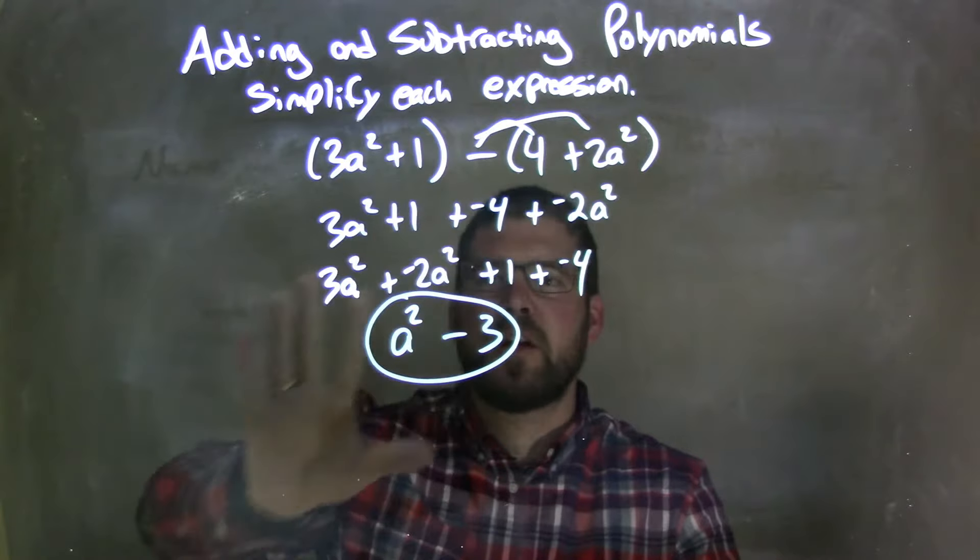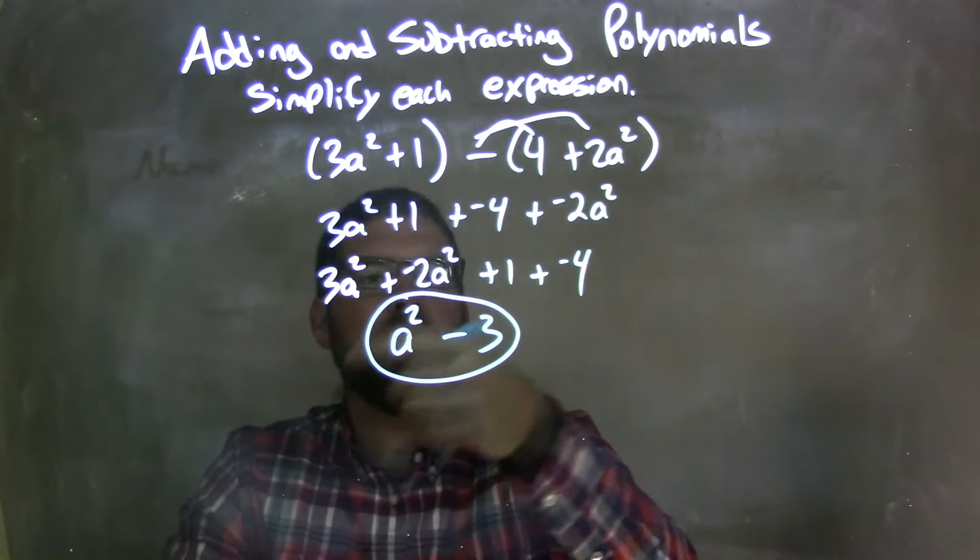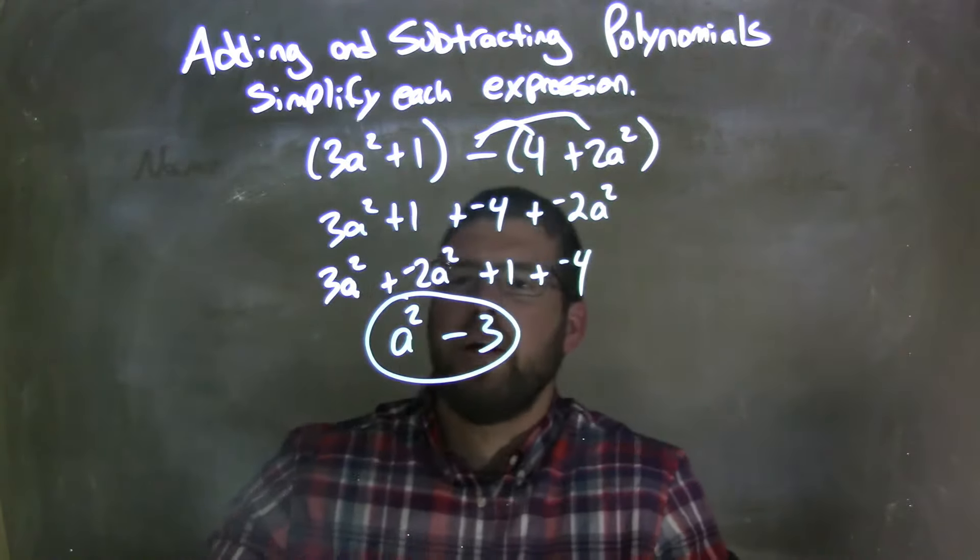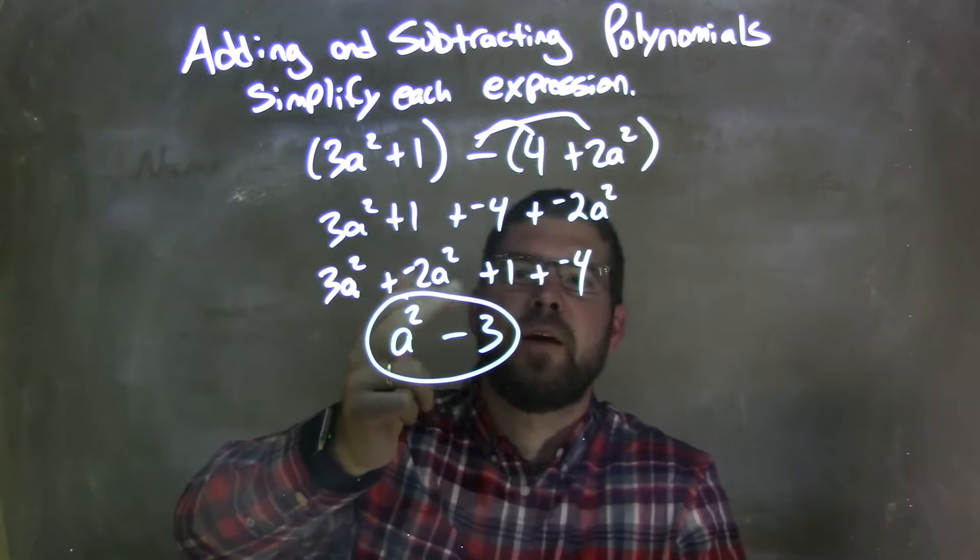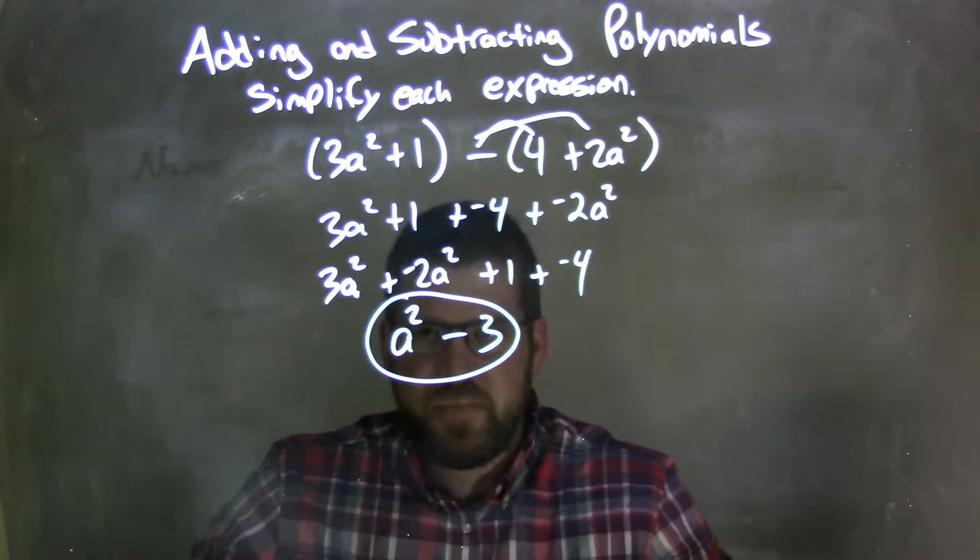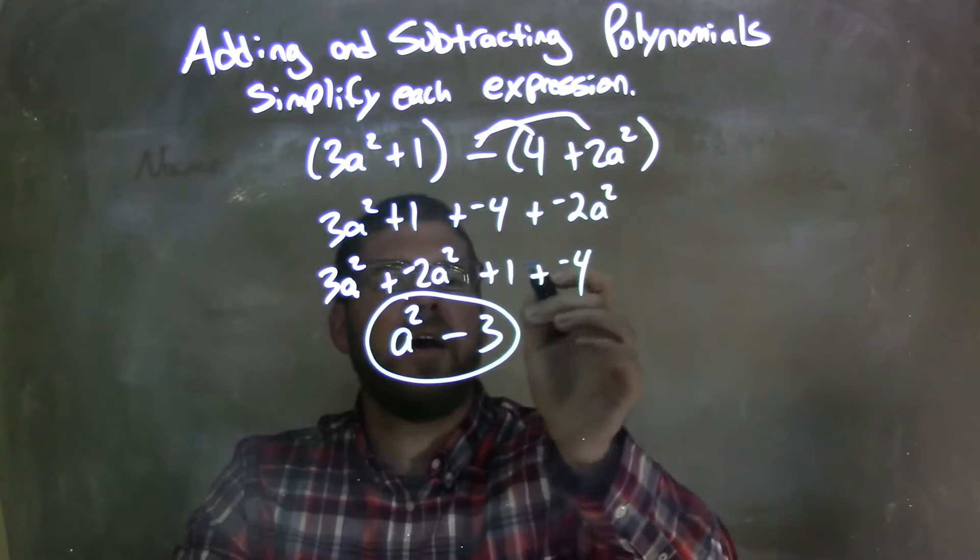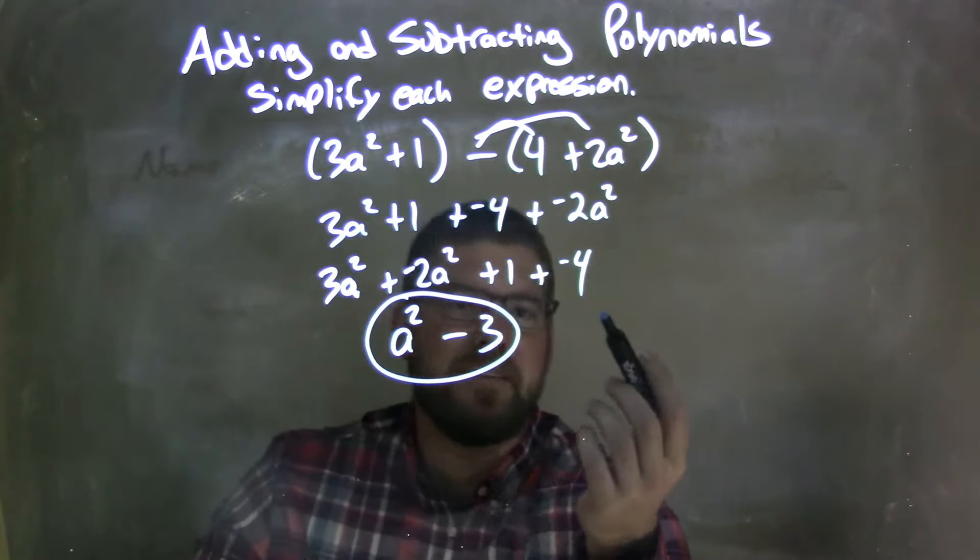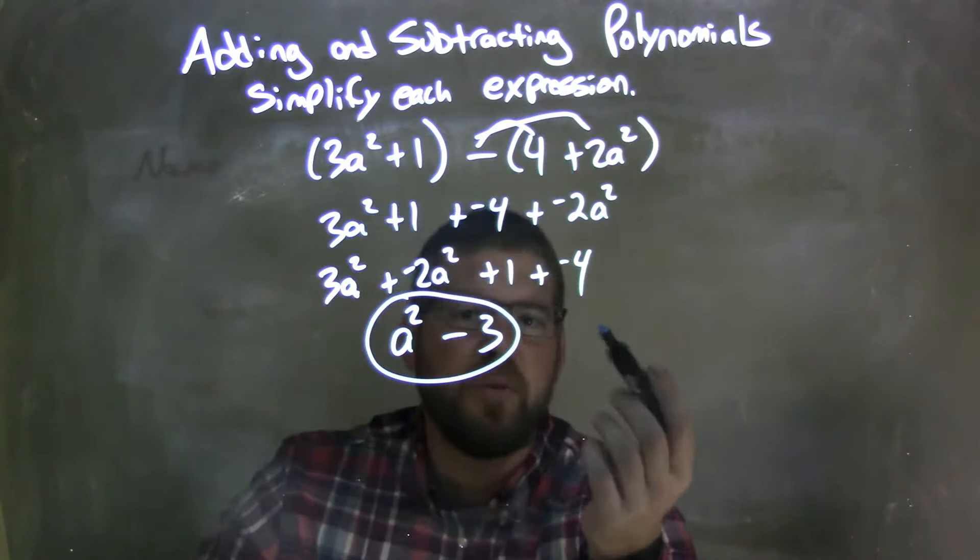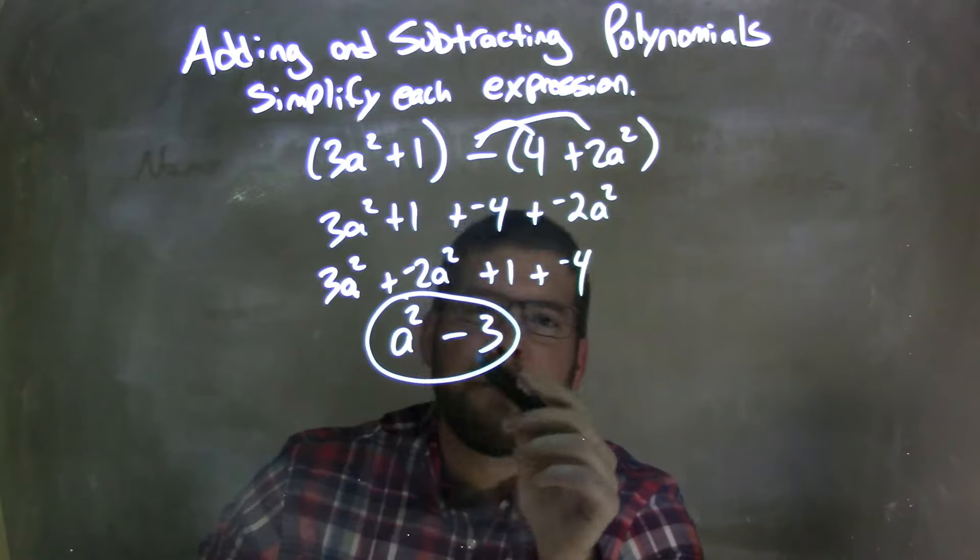Then I rearrange using the commutative property. Put my a squareds first, then my constants second. So I have 3a squared plus a negative 2a squared plus 1 plus a negative 4. Now I combine my like terms. 3a squared plus a negative 2a squared is a squared. And 1 plus a negative 4 is a negative 3. And adding a negative 3 is the same as subtracting a 3. And so now we have our final answer, which is a squared minus 3.